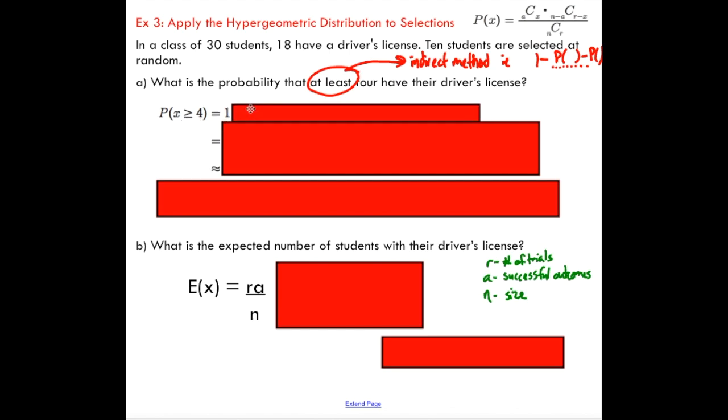One, two, three—and this will be not getting at least four. That'll be zero, one, two, and three. We're going to take that away from one, and that should give us the probability of getting at least four. Much quicker, much more efficient.